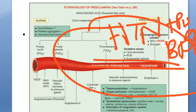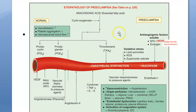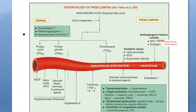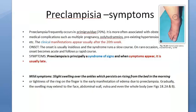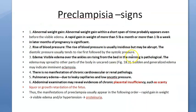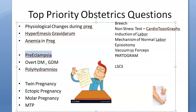Hypertension plus proteinuria equals preeclampsia; add seizures and it becomes eclampsia. The etiopathogenesis involves thromboxane, cytokines, and especially soluble fms-like tyrosine kinase-1 (sFlt-1) — an anti-angiogenic factor causing vasospasm — along with endothelin. Signs include ankle edema, headache, blurred vision (ominous signs), and abnormal weight gain. To treat hypertension in preeclampsia, give labetalol, nifedipine, hydralazine, nitroglycerin, or sodium nitroprusside.